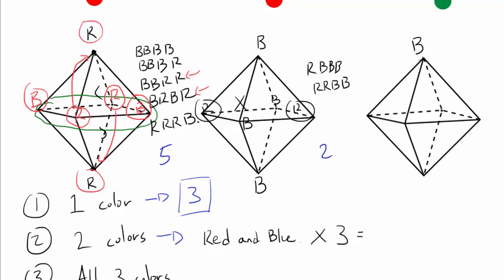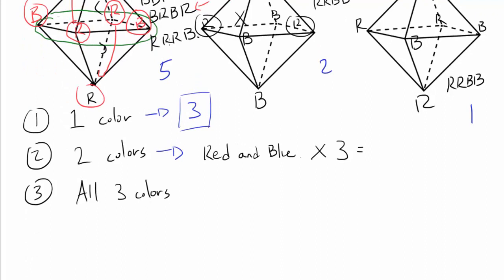Finally, count cases with blue on top and red on the bottom, where neither two reds nor two blues are opposite each other. The only possibility is two reds and two blues in the center square arranged adjacently (red-red-blue-blue), since red-blue-red-blue would put reds opposite each other. That gives one more case. So we have 5 + 2 + 1 = 8 cases for red and blue, multiplied by 3 gives 24 cases for the two-color scenario.